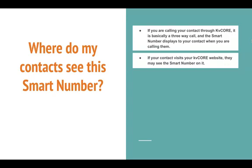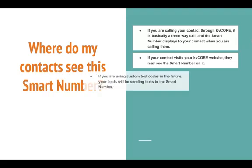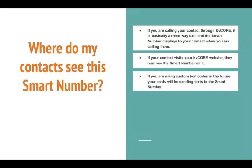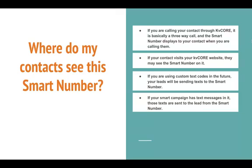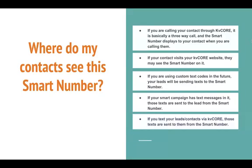If your contact visits your KVCore website, they may see your smart number on it. If you're using custom text codes, your leads will be sending texts to the smart number. If you already have those leads in your contacts, you will be receiving their phone number, not coming from the smart number. If your smart campaign has any text messages in it, those texts are sent to the lead from the smart number. And if you text leads or contacts via KVCore, those texts are sent from the smart number as well.